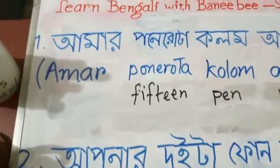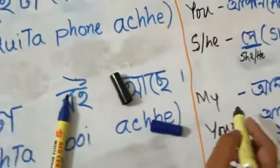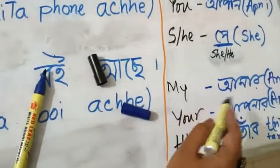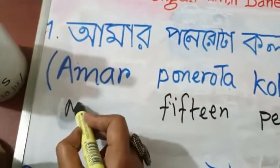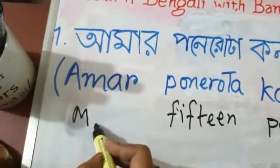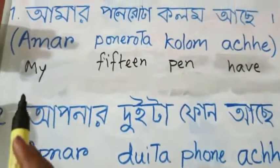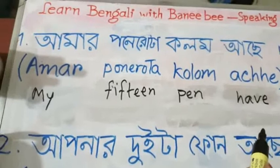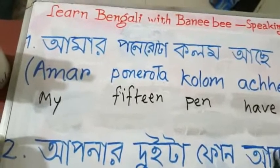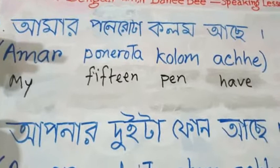'Amar' is 'my,' so the literal translation looks like: 'my fifteen pen have.' It looks a bit weird, right? If you want a literal translation from one language to another, it's not always going to work in the same word order.